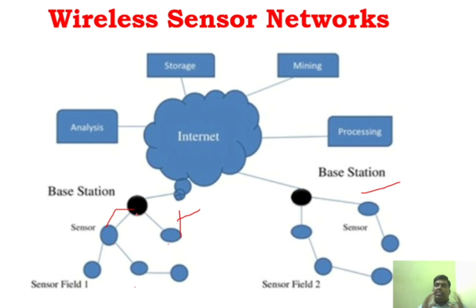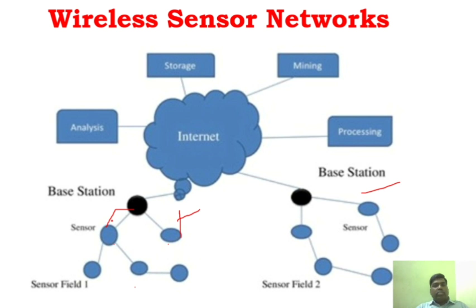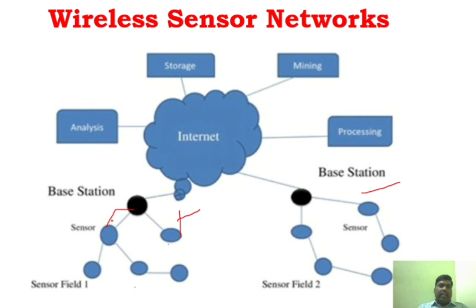These sensor nodes can communicate with each other, and there will also be a central unit — a central processing station called the base station. Sensors send information to the base station, which can be connected to the internet or a different network where the information can be visualized, stored, and analyzed. For example, in military applications, if you want to monitor enemy troops, you can deploy a sensor network to gather and store that information on the internet for further processing.